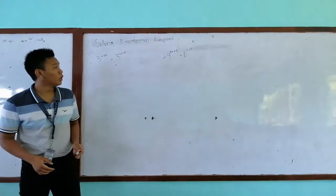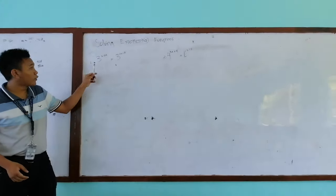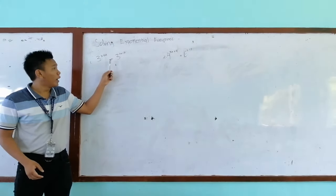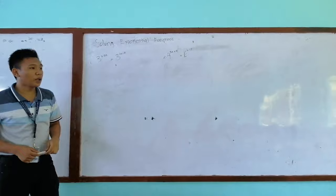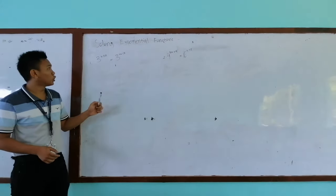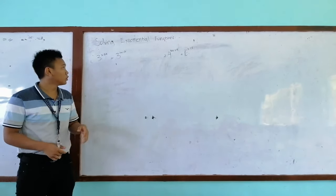So the first thing to do is to look at your given. So for example number 1, 3 raised to the power of x plus 2 is equal to 3 raised to the power of 2x minus 3. So the first step is that we should look at our base. So we discussed earlier about the parts of a function.